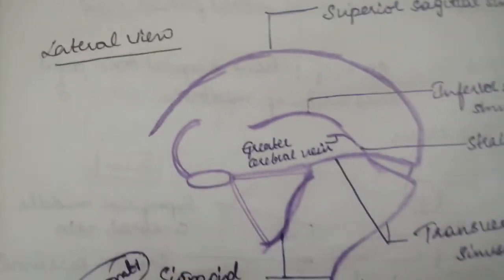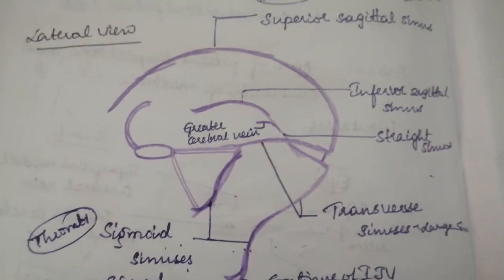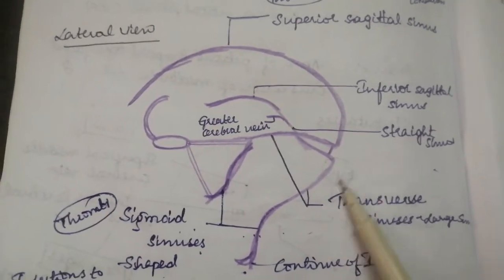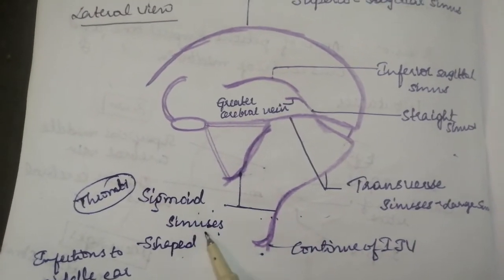When we talk about the lateral view of some other sinuses like we have superior sagittal sinus, inferior sagittal sinus, straight sinus, transverse sinus and we have your sigmoid sinus.